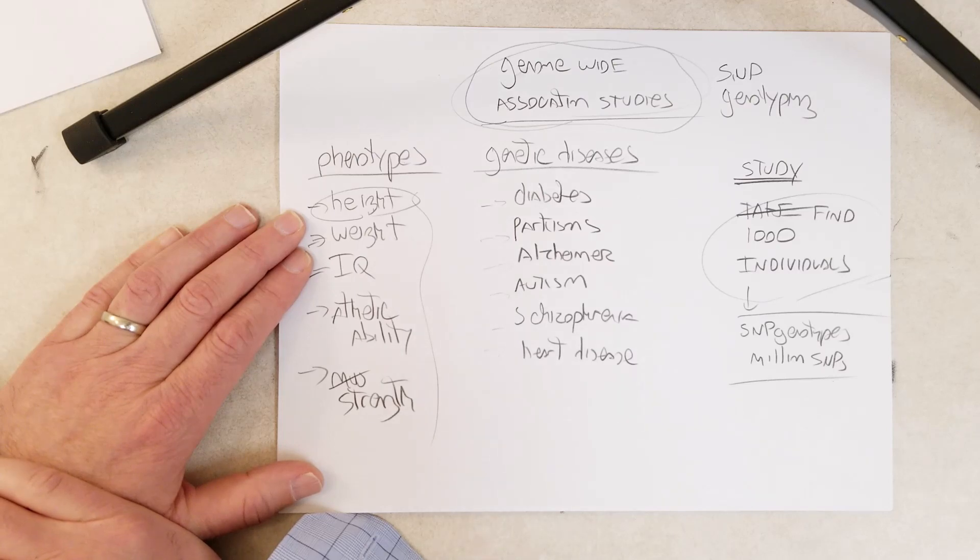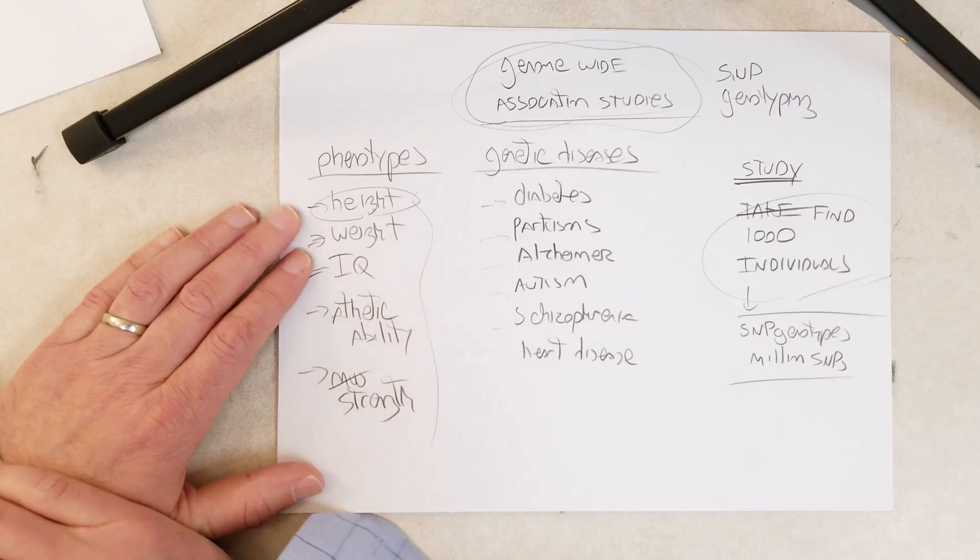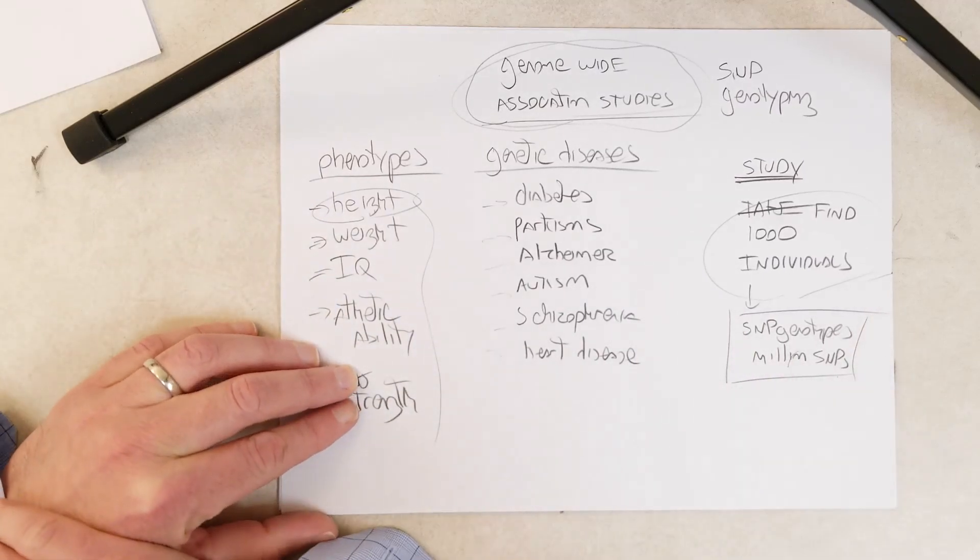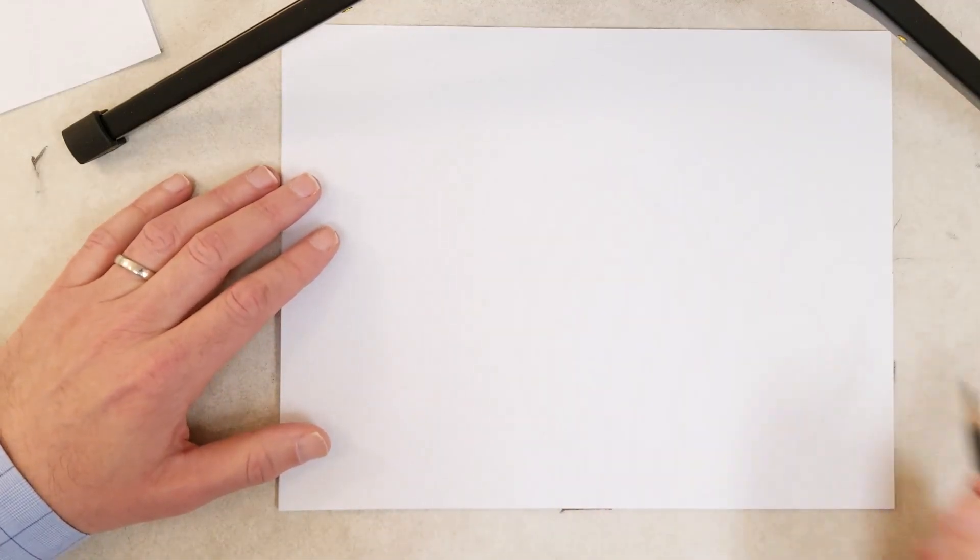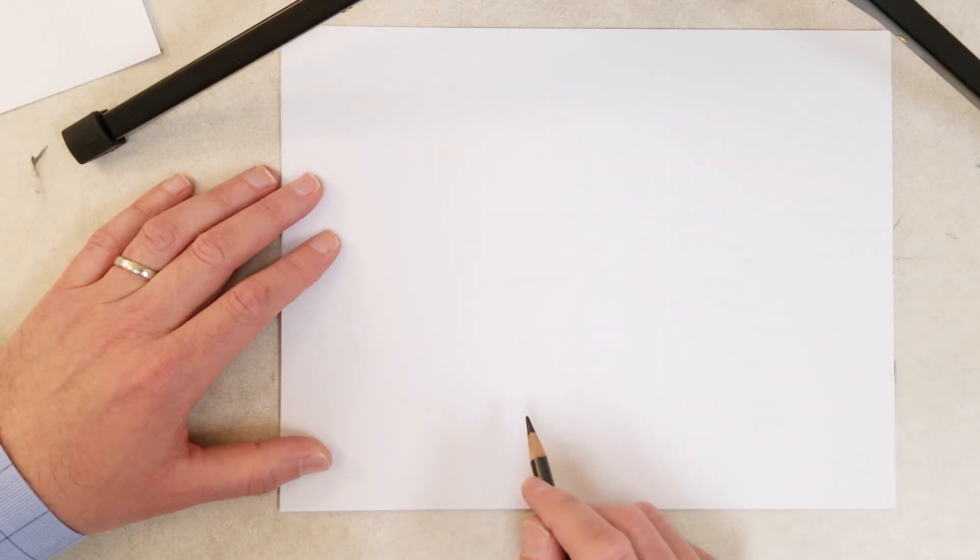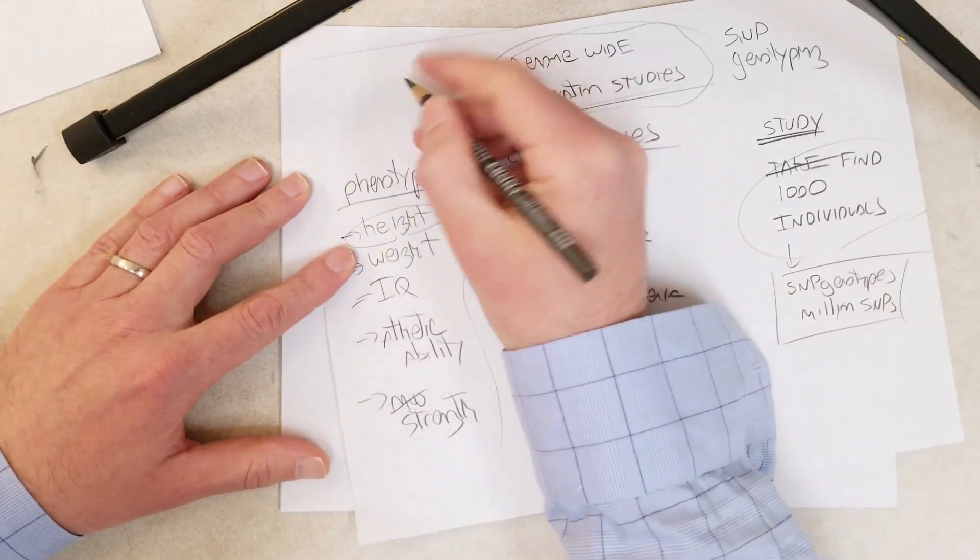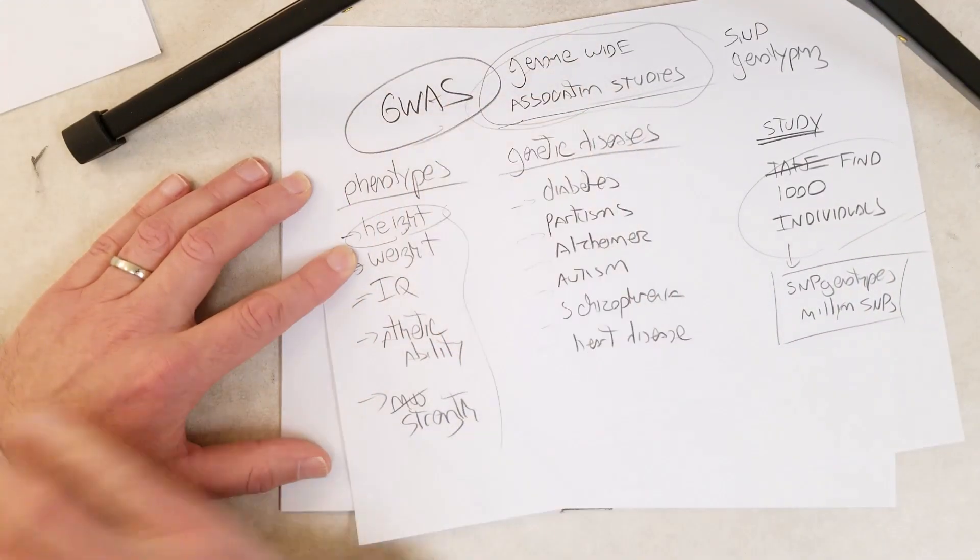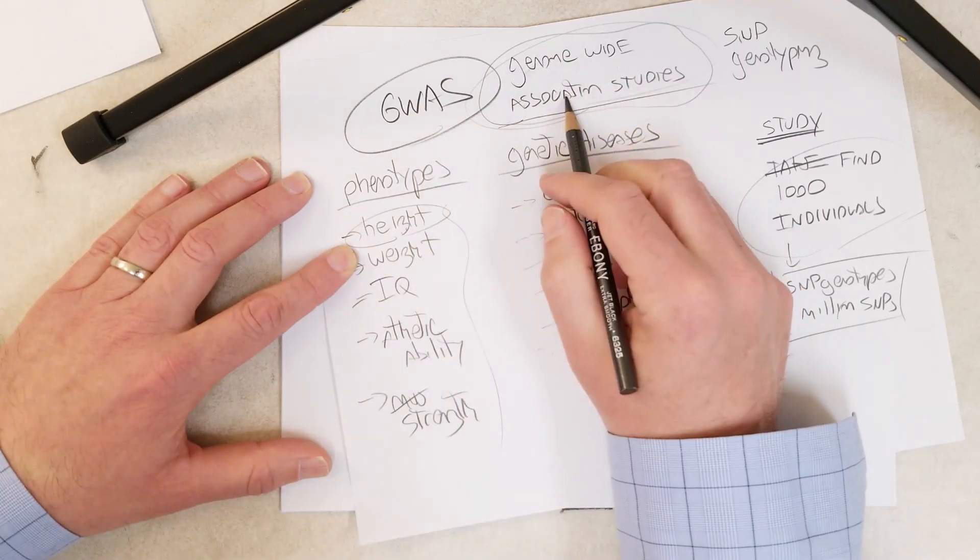After that, you need to do some statistical analysis. Essentially, a common way to present genome-wide association study data - there's an acronym for these studies: GWAS studies, genome-wide association studies.